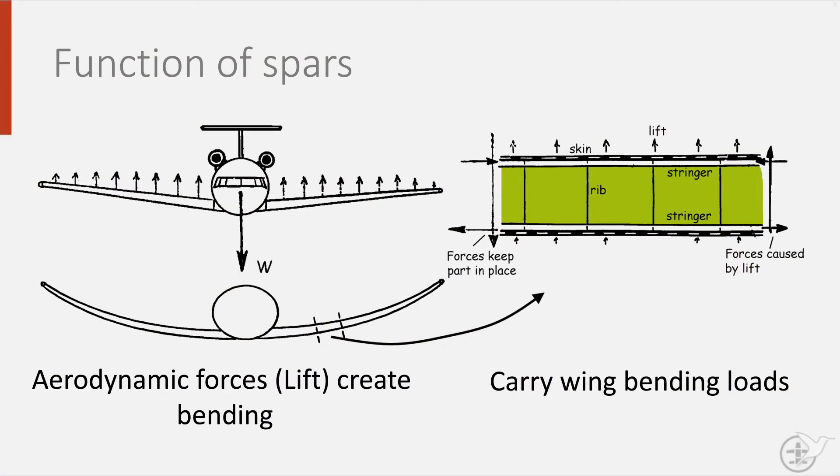When talking about aircraft wings, we must also discuss spars. They are the long spanwise beams in a wing. Spars have as a main function to carry the bending loads in the wing, generated as a result of the aerodynamic forces on the wing.